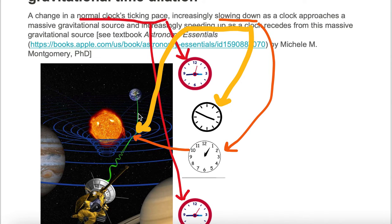And when the clock is far away from the Sun along this green path approaching planet Earth, the signal goes back to its normal ticking pace.